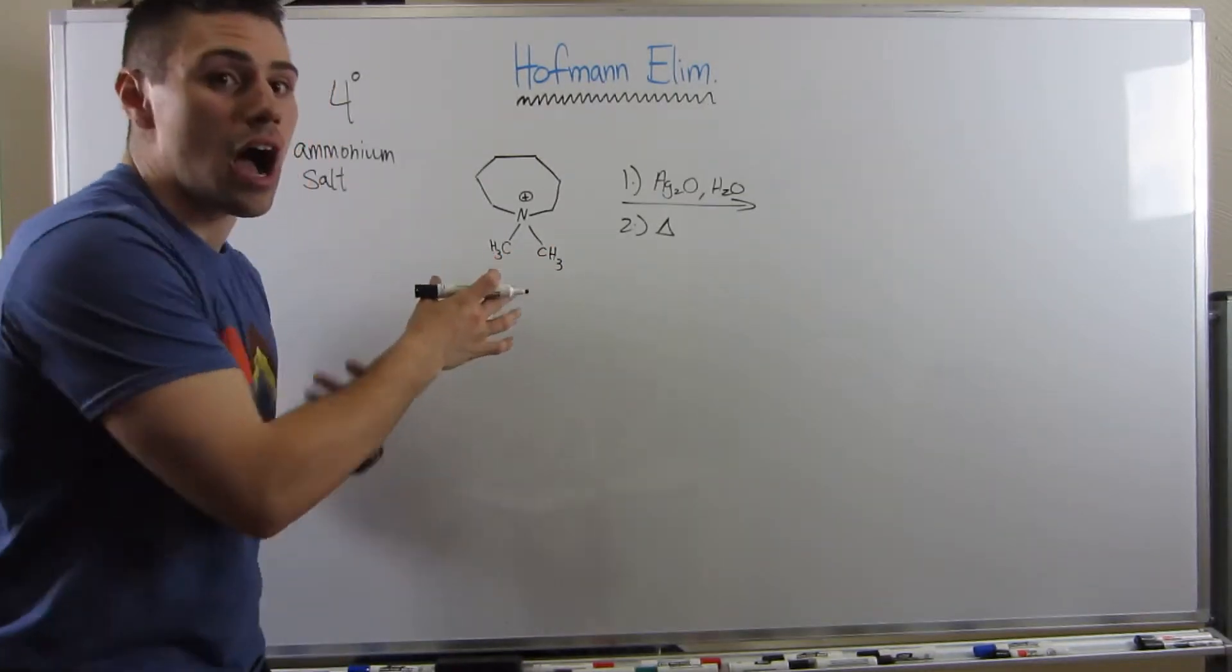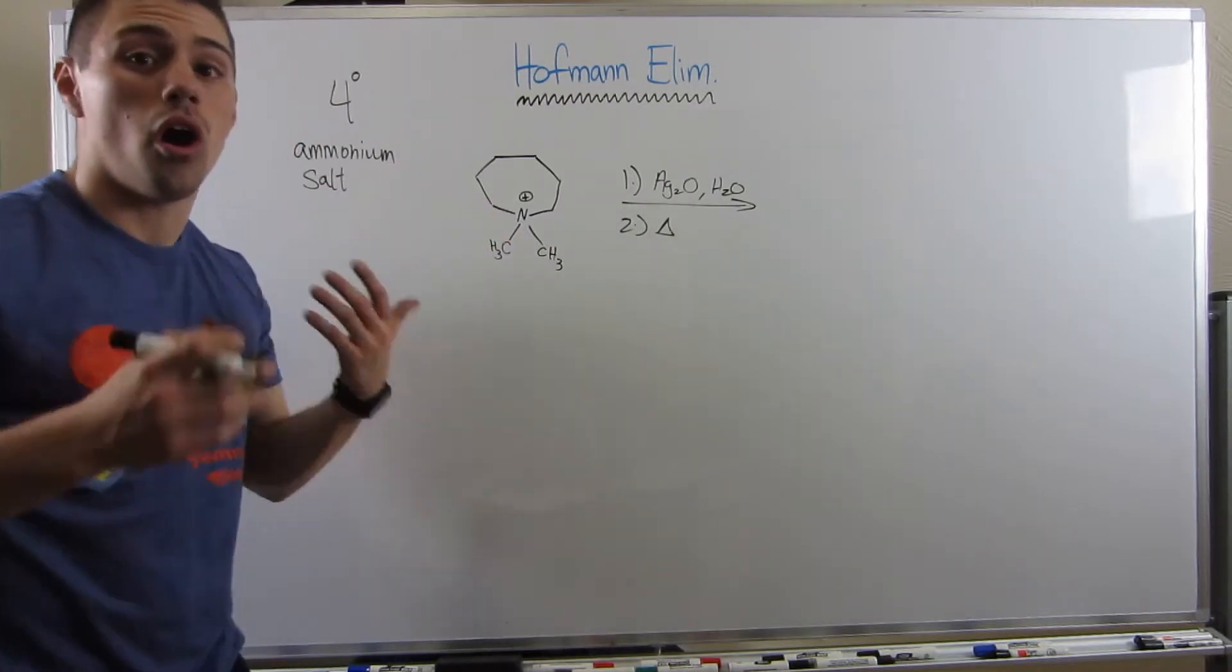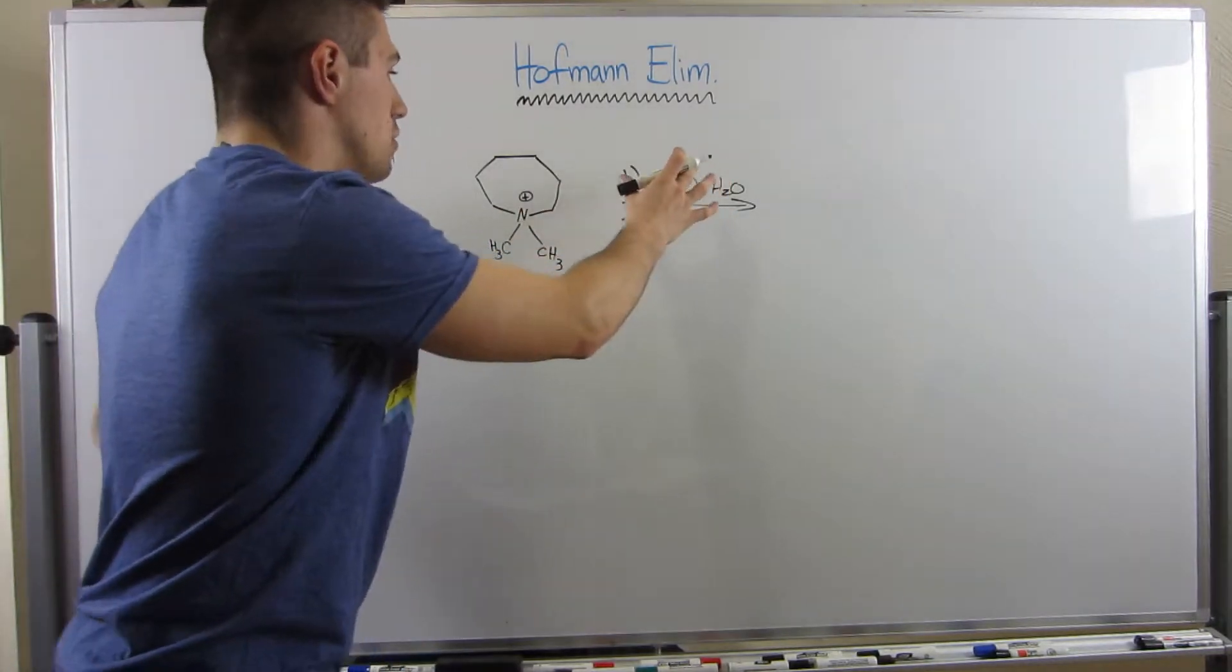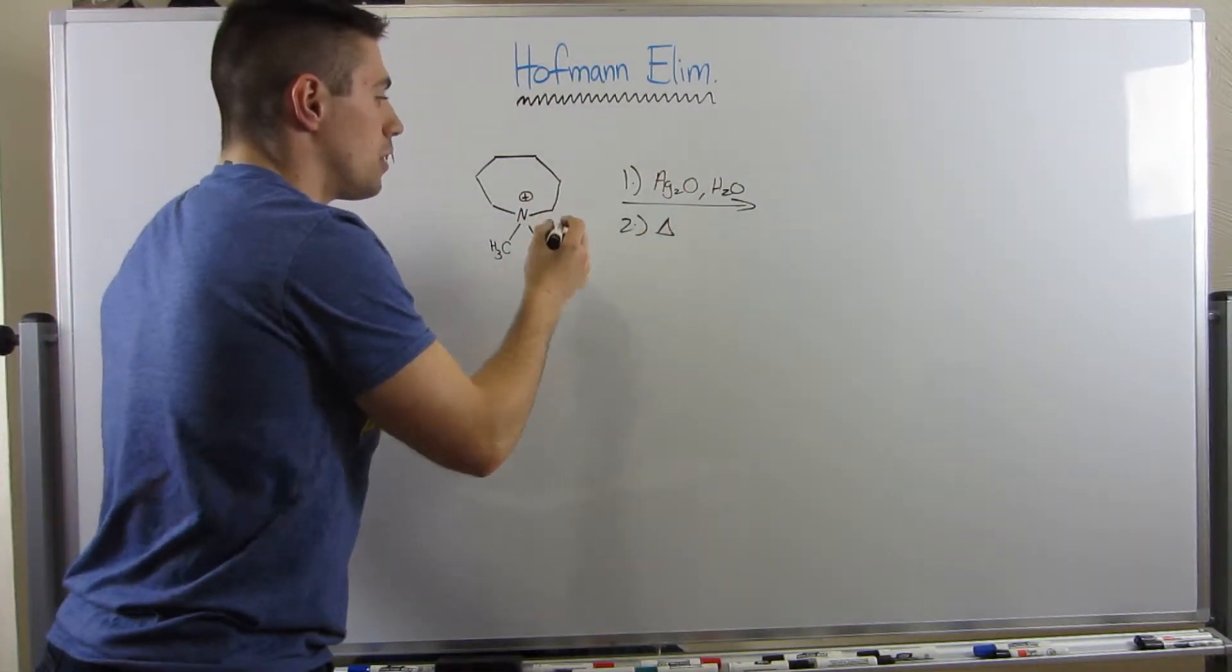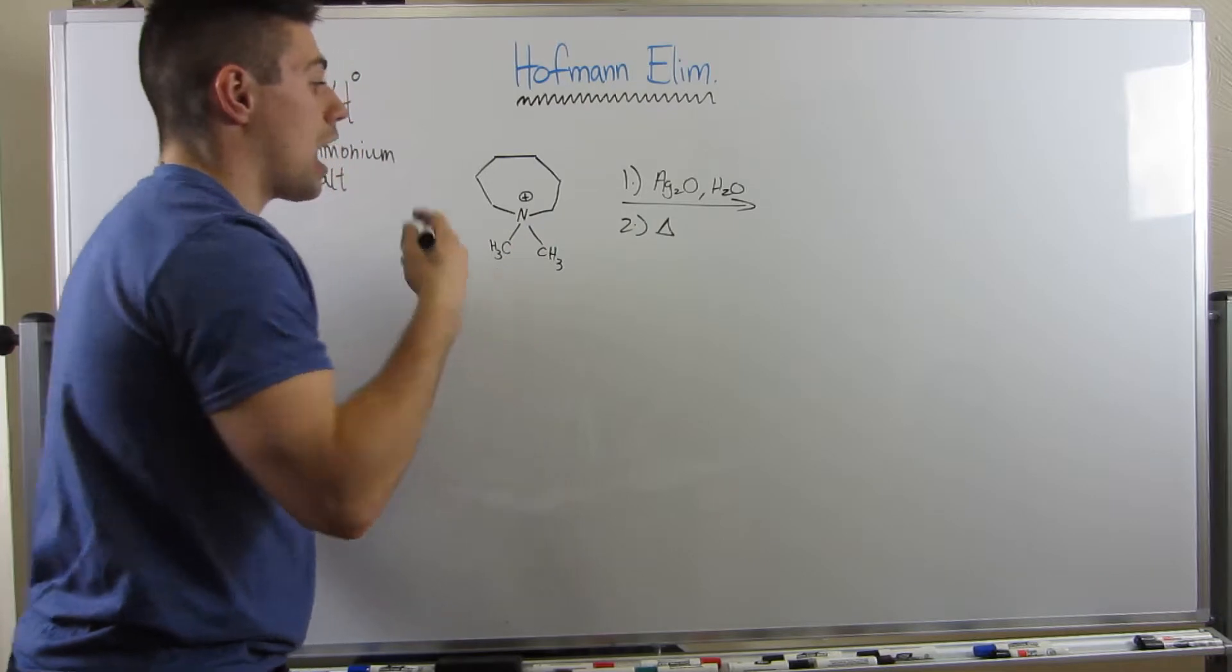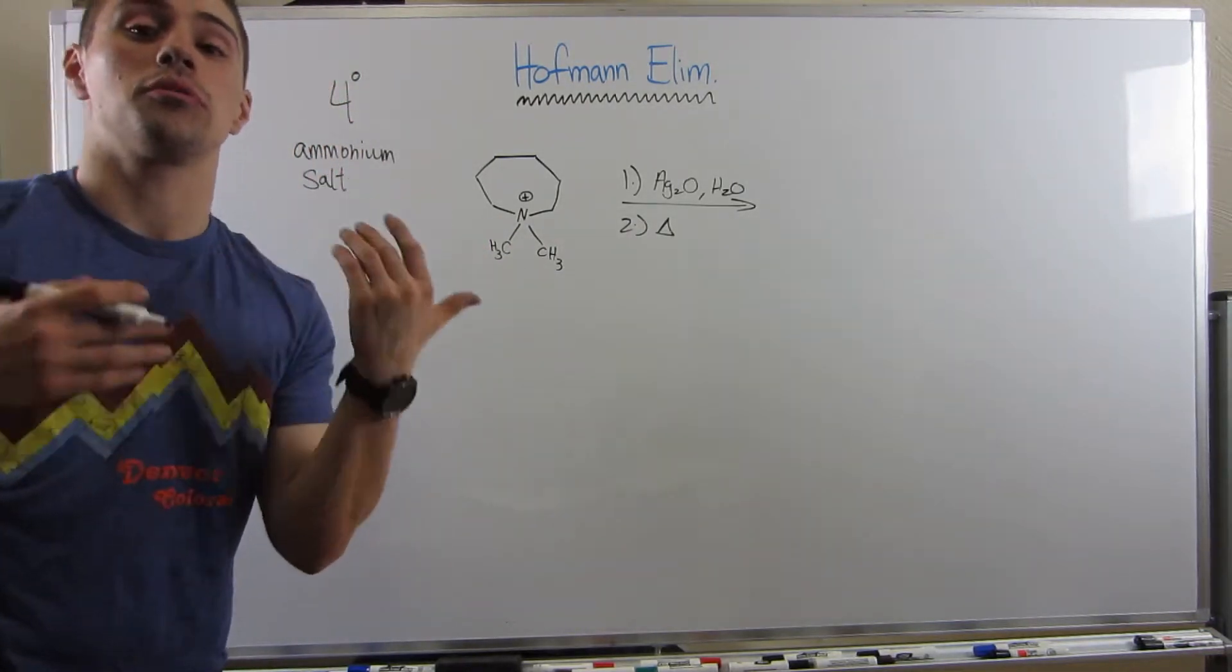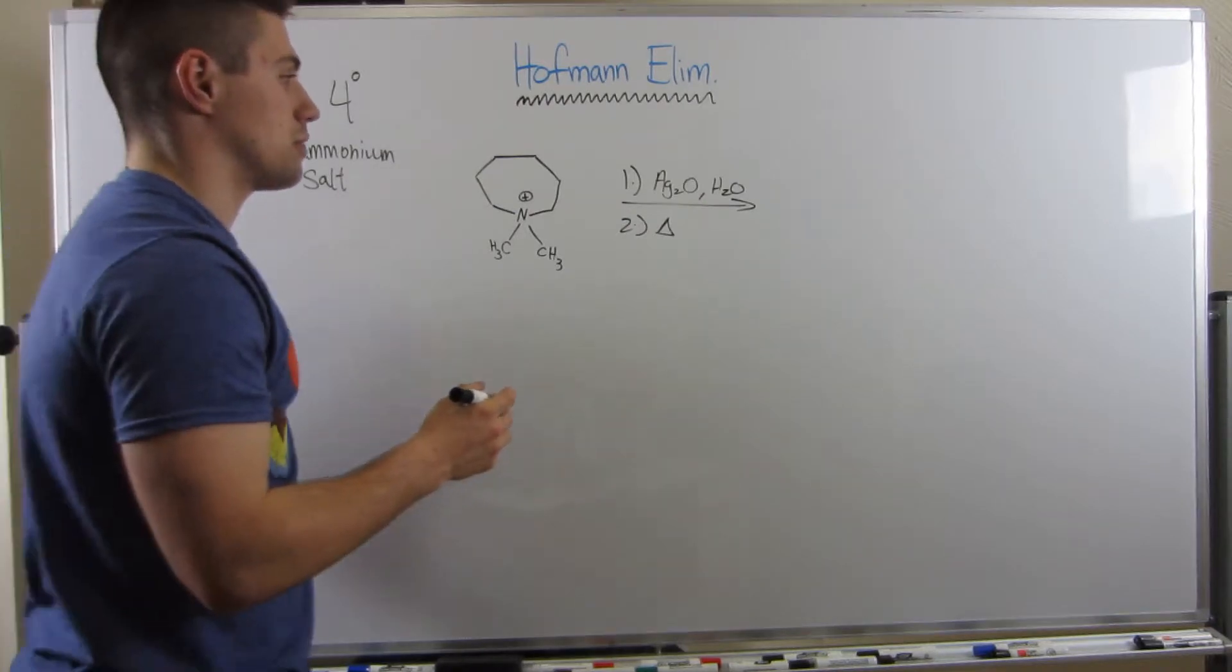So, the only way to kind of get rid of that positive charge is if we do an elimination reaction. We can't just pick off a hydrogen here and dump electrons onto nitrogen. So, no mechanism here, but basically what you're going to do is someone is going to lose a hydrogen, and some bond is going to break, and a double bond is going to be formed.